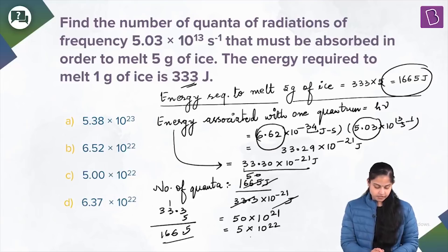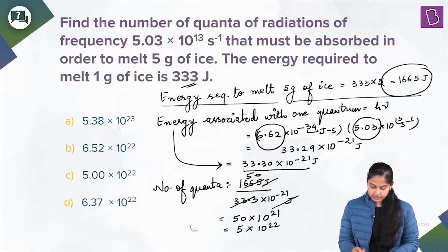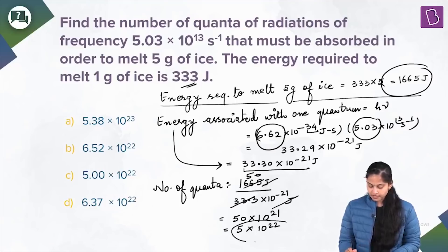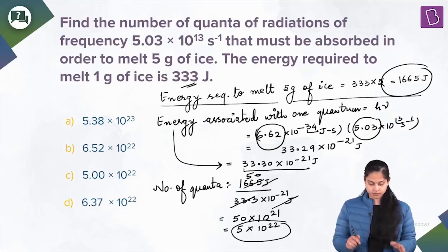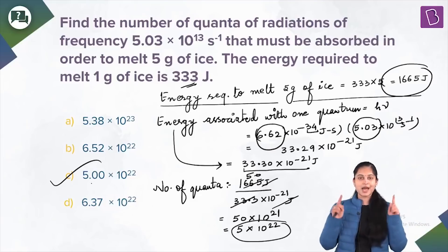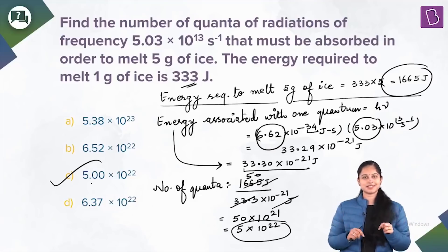Option C is the right answer — 5 × 10²² is the correct number of quanta required. Option C is absolutely right.